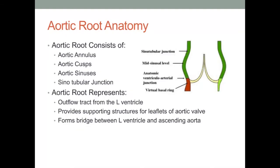An understanding of aortic root anatomy is critical to best describe and differentiate between aortic root enlargement techniques. The aortic root consists of the aortic annulus, aortic cusps, aortic sinuses, and the sinotubular junction. The aortic root represents the outflow tract from the left ventricle, it provides supporting structures for the leaflets of the aortic valve, and it forms a bridge between the left ventricle and ascending aorta.